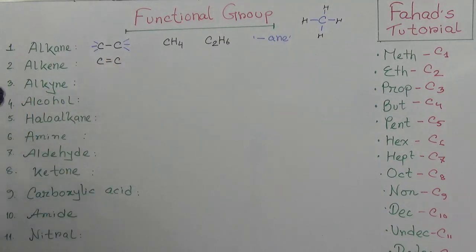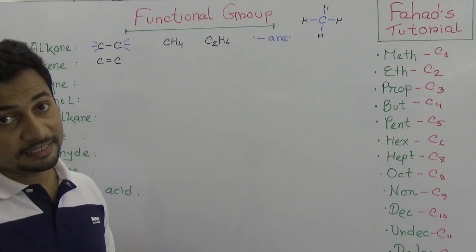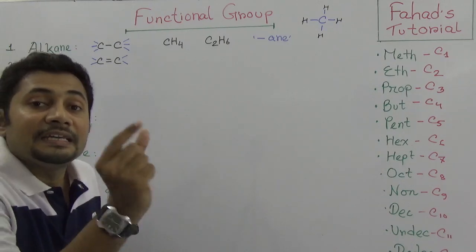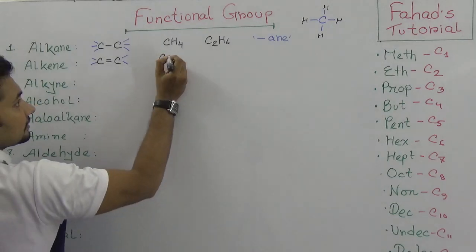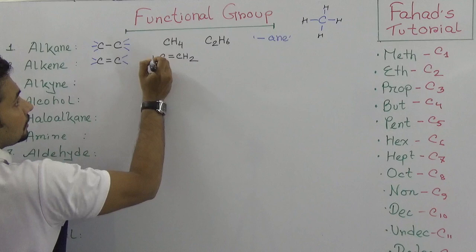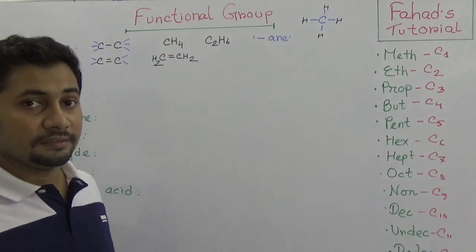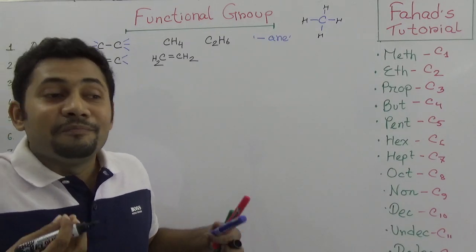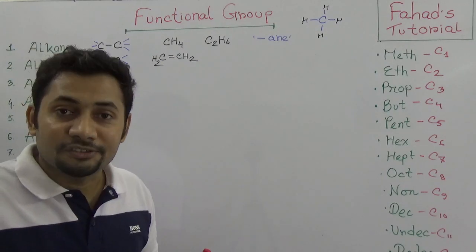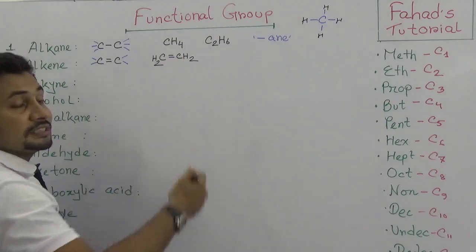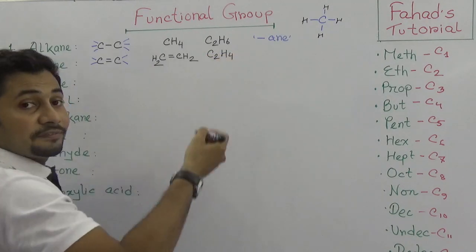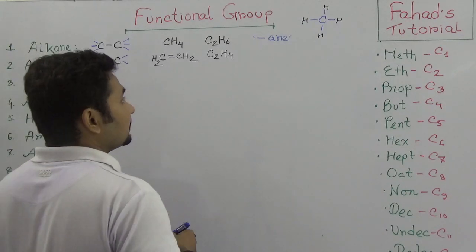Alkene has a carbon-carbon double bond. For a carbon-carbon double bond there must be at least two carbons, so on the other side there will be two hydrogens. C2H4 is ethene and this is the first member of the alkene group. There is no methene because you need at least two carbons to form the double bond.